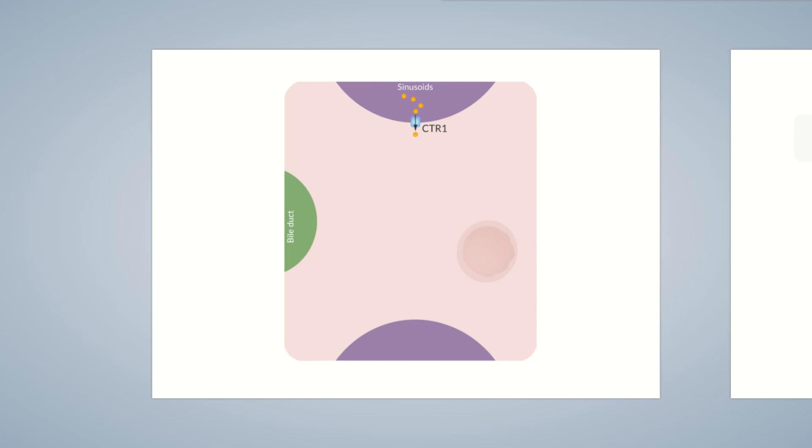The role of the hepatocytes is to determine the amount of copper to be stored and excreted by the body. For copper to be transported from the liver to individual organs, it needs to bind to a carrier protein. This occurs in the Golgi apparatus of the hepatocyte.